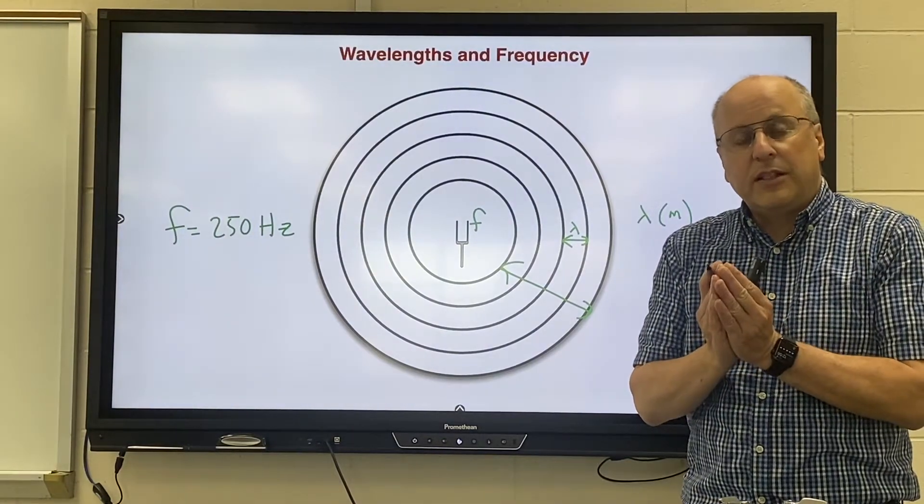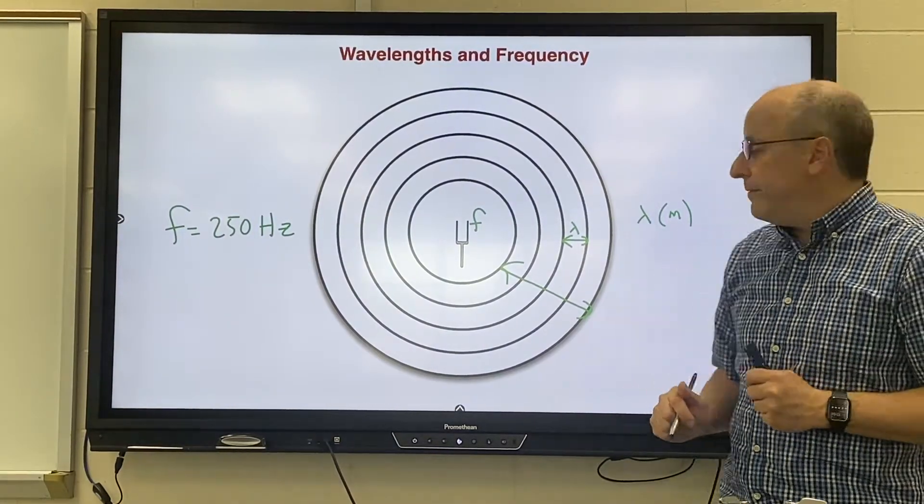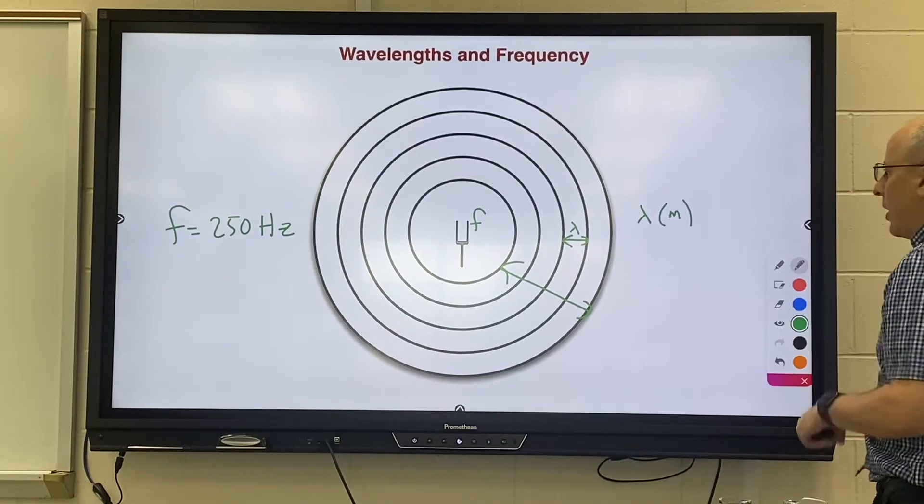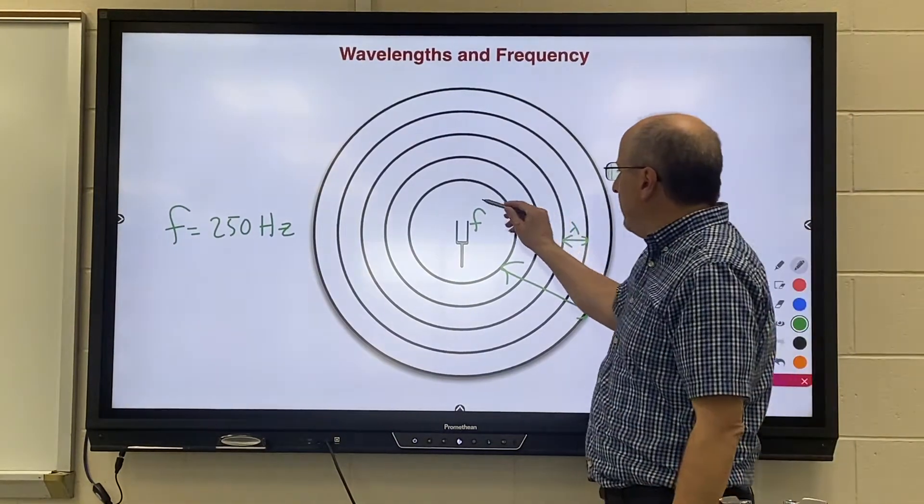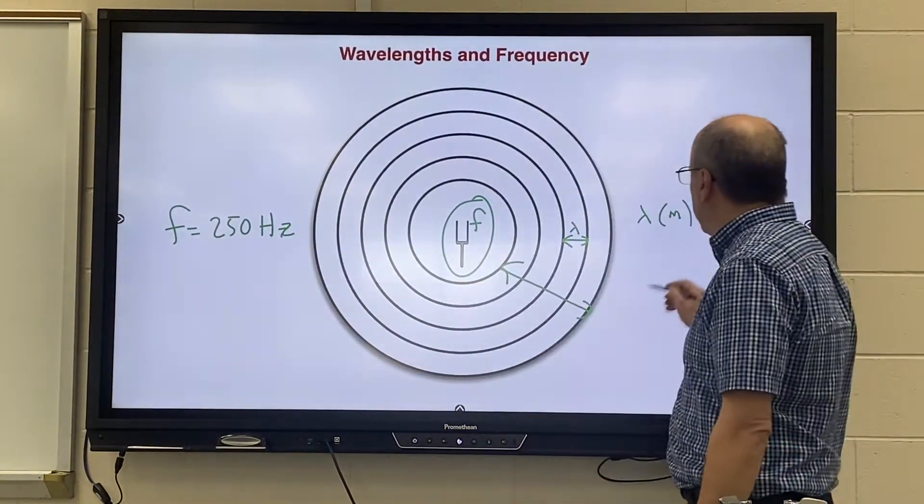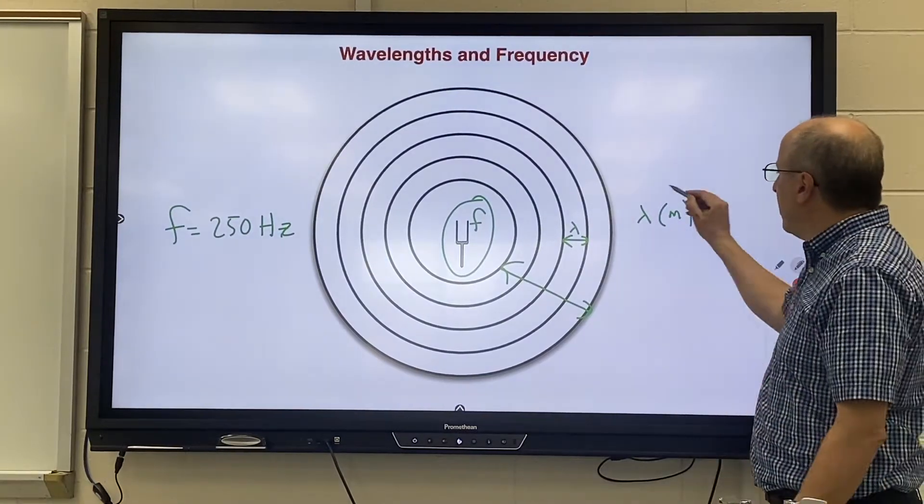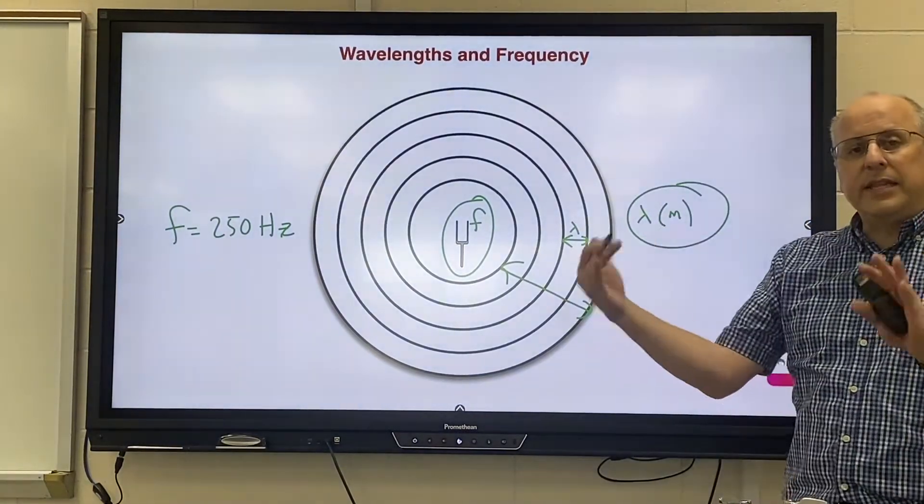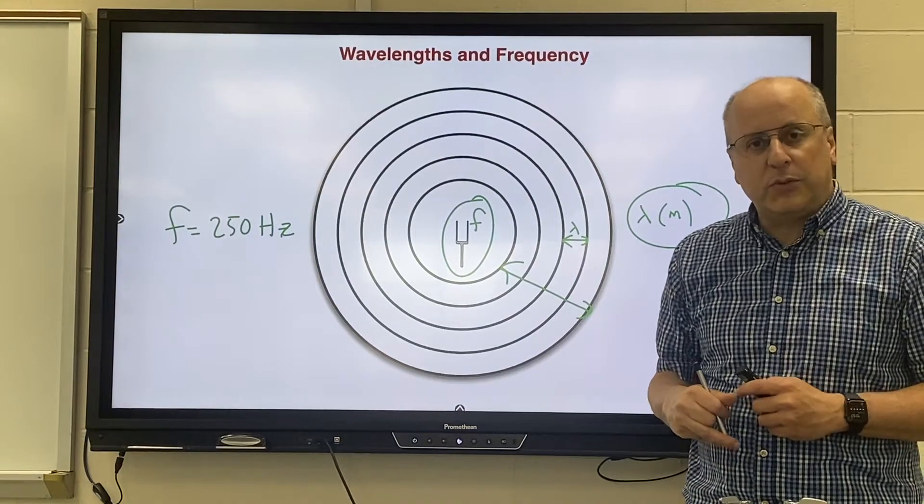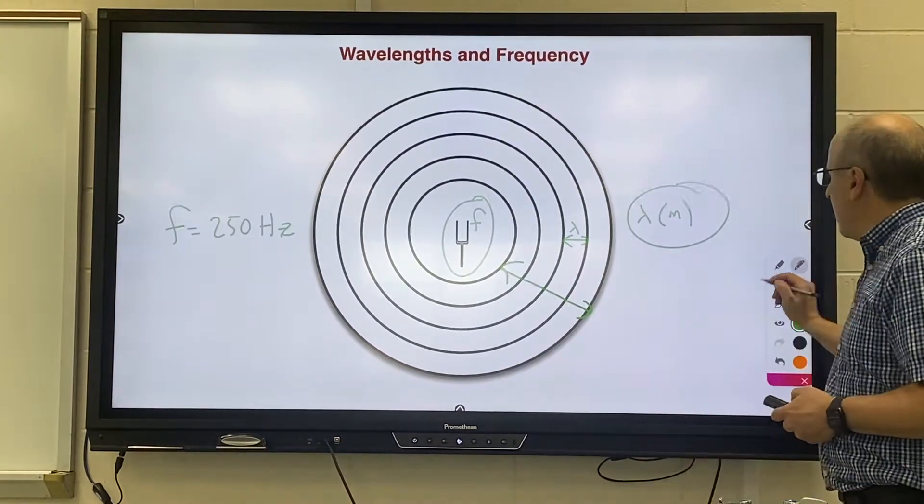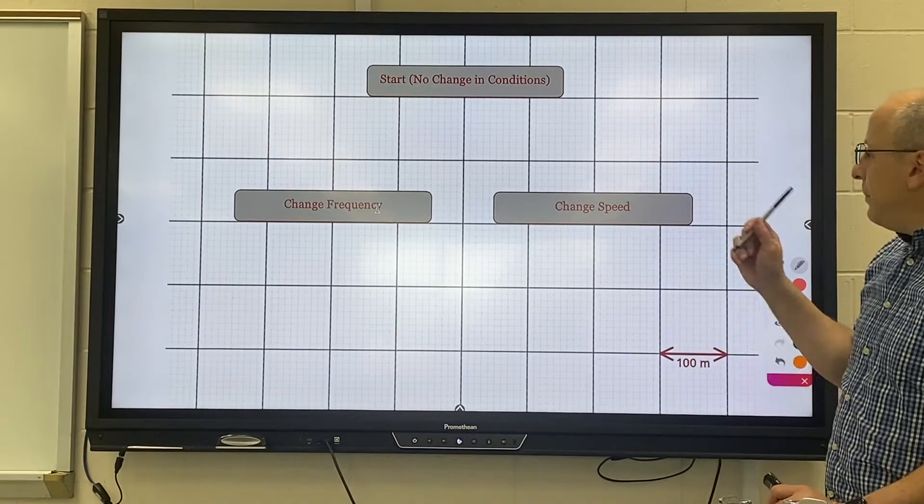So there are two variables we're looking at: frequency measured in Hertz caused by the source, the wavelength the distance between adjacent waves. How are they connected? Well in lab we messed around with frequencies.